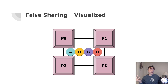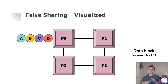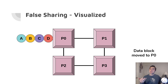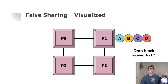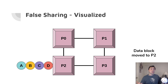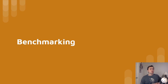We can visualize false sharing with a cache line containing four atomic integers: A, B, C, and D. Maybe P0 only updates A, P1 only updates B, P2 only updates C, and P3 only updates D. But when P0 tries to update A, it grabs A, B, C, and D because they're all on the same cache line. When P3 tries to update D, it grabs them all. Same with P1 and P2. So while P2 is only trying to update C, it grabs A, B, and D as well. This is false sharing. We'll look at benchmarks to show how big a problem it can be.